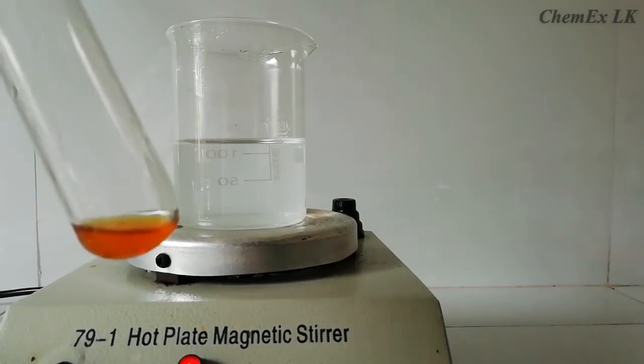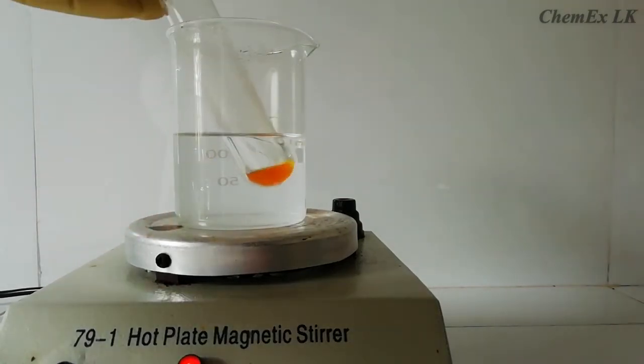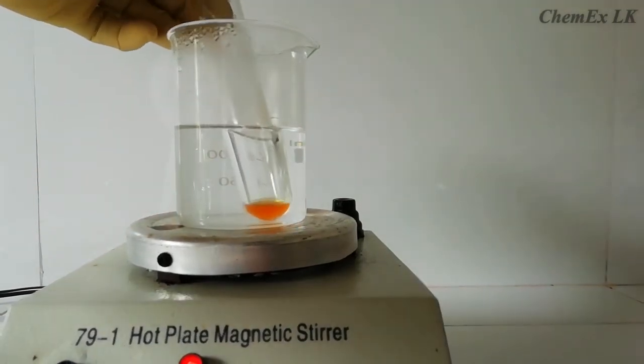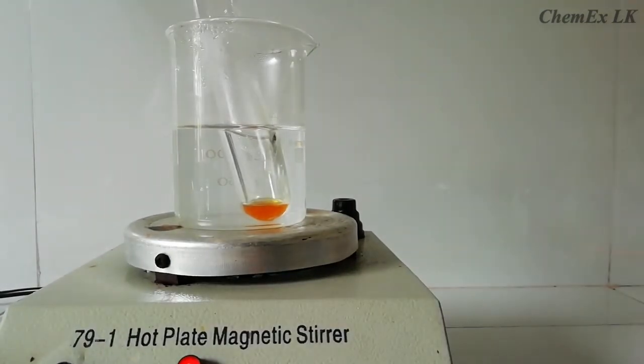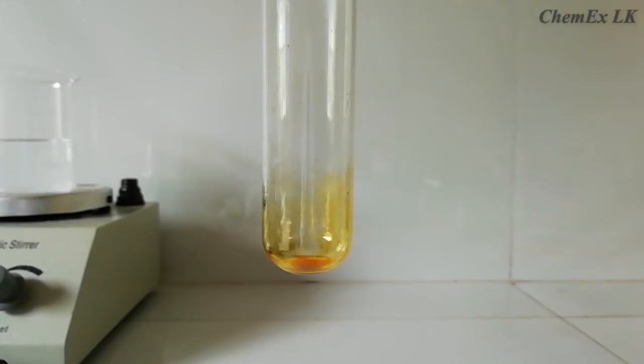To evaporate the DCM, we can place this test tube in a boiling water bath. After few minutes, we can see our DCM is evaporating and we can observe a thick oil-like layer in the tube. After evaporating DCM, you can see our sample like this.